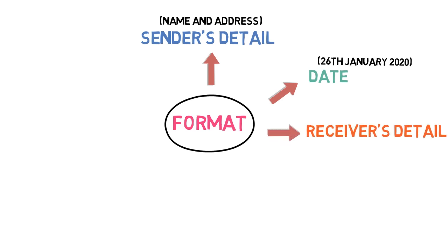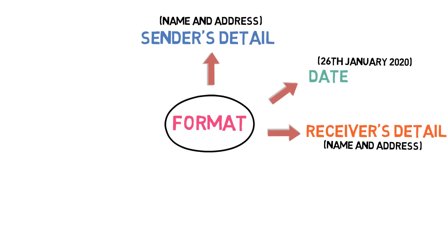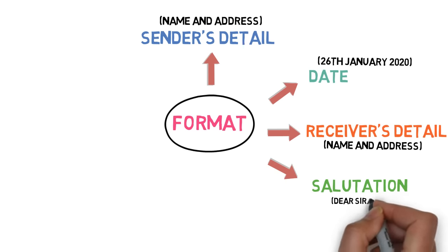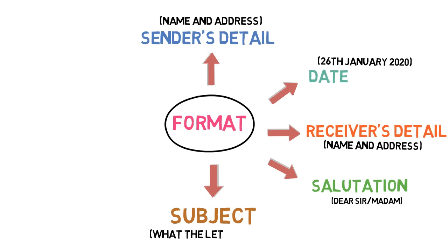Number 3 is the receiver's details — the receiver's name and address, as he is the one receiving the letter and for whom the letter is written. Number 4 is salutation. A salutation is a greeting used in a letter. Generally, we use 'Dear' followed by the recipient's given name. If the name is unknown, we use 'Sir' or 'Madam'. Number 5 is subject — it is used so that the reader immediately knows what the letter is about.